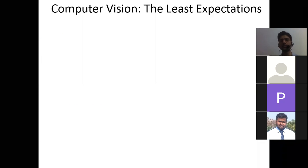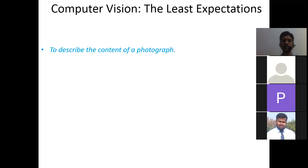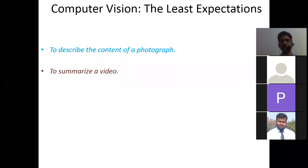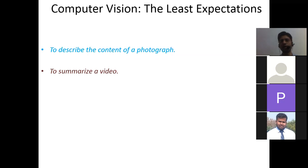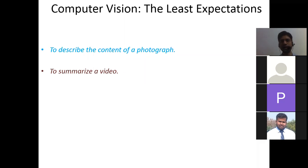The least expectation we have from computer vision is to describe the content of a photograph — because even a five- or six-year-old child can describe a photograph of their parents. So a machine should at least describe the content of a photograph. Another basic expectation is to summarize a video — a child can also summarize what is happening in a cartoon or movie, so we expect computer vision to summarize a video for us.